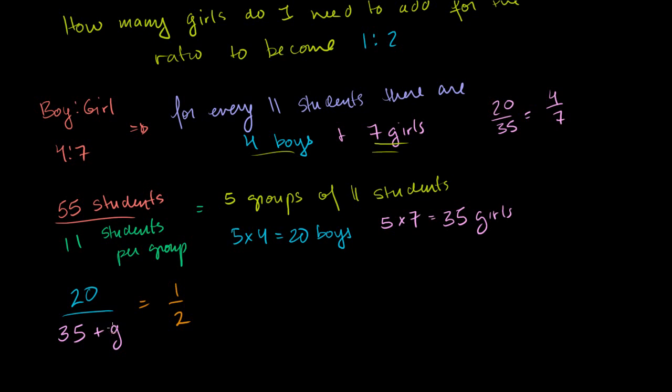That's how you would solve it in your head. If you want to do it algebraically, you could cross-multiply. So you get 35 plus g times 1. So you get 35 plus g is equal to 2 times 20 is equal to 40, which is essentially what we did in our head. We said, hey, this thing has to be equal to 40. So if you subtract 35 from both sides, you get g is equal to 5.